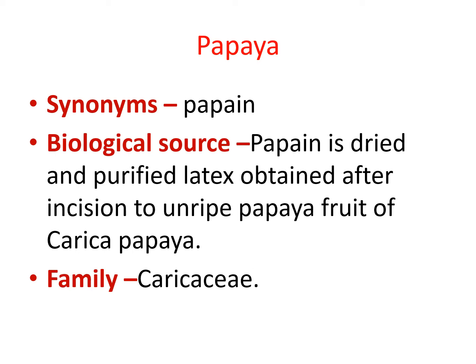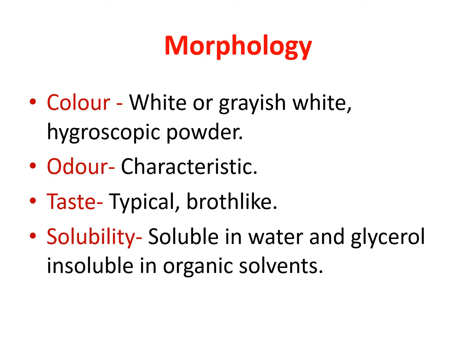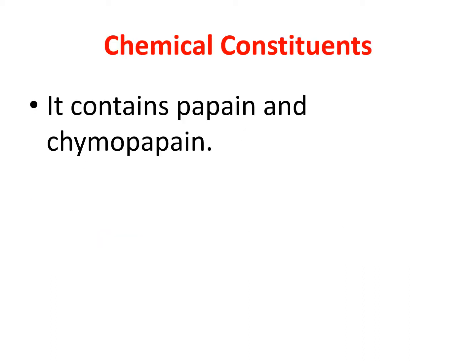Our third drug is papaya. The synonym of papaya is also called papain. Biologically, papain is a dried and purified latex obtained after incision of unripe papaya fruit of Carica papaya, which belongs to the family Caricaceae. Morphologically, papaya has a white or grayish-white color, is a hygroscopic powder with a characteristic odor and broth-like taste. Papain is soluble in water and glycerin, but insoluble in organic solvents. Chemically, papain contains papain itself and chymopapain as active chemical components.